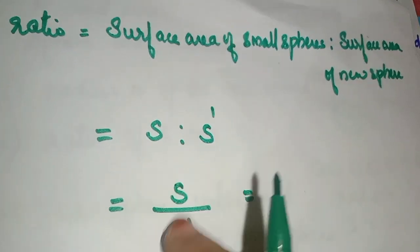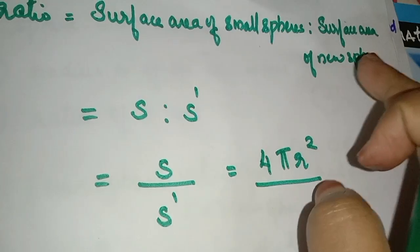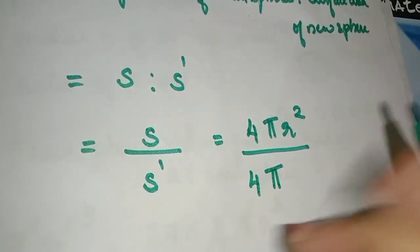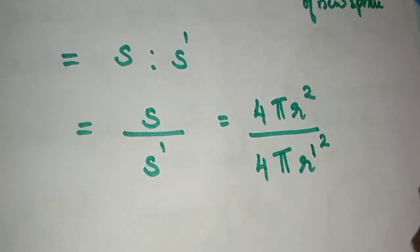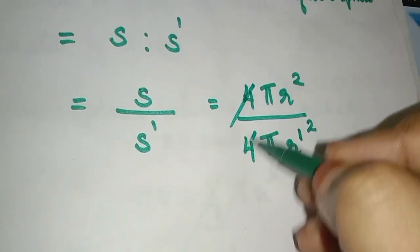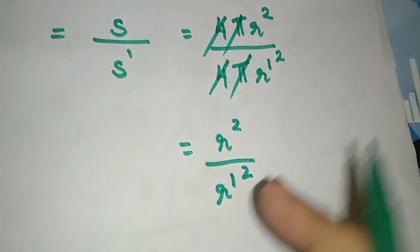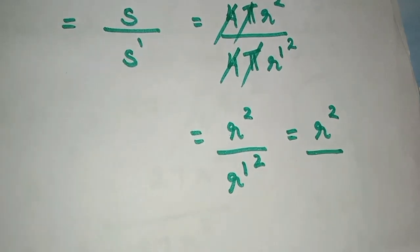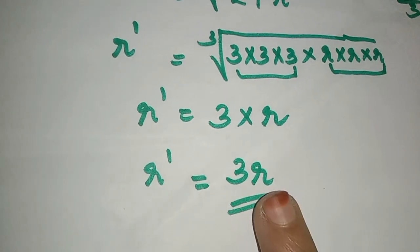The surface area of the small sphere is 4 pi r square and the surface area of the new sphere is 4 pi R' square. So the ratio S by S dash is r square divided by R' square.